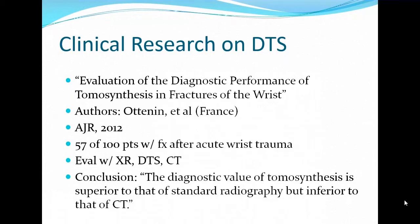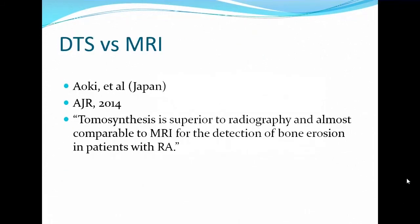A 2012 article from France concluded that the diagnostic value of tomosynthesis is superior to that of standard radiography but inferior to that of CT. A 2014 Japanese study found tomosynthesis superior to radiography and almost comparable to MRI for bone erosions in patients with rheumatoid arthritis. I use these two studies to reinforce that we want to consider DTS as an intermediate step, on par with MRI in some cases, where we're trying to use the most appropriate level of imaging modality necessary to satisfactorily diagnose and treat a clinical condition.